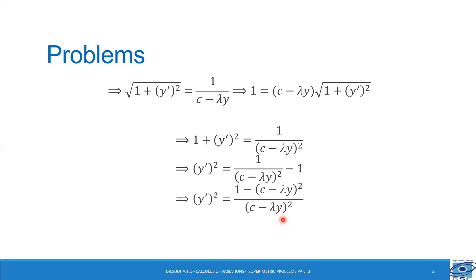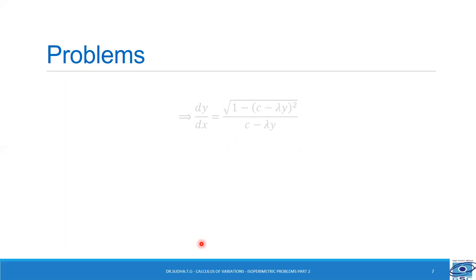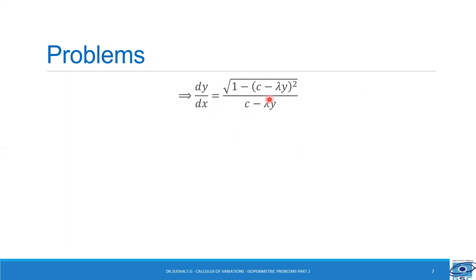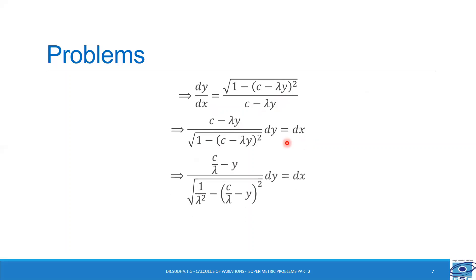Here we require y', so removing the root sign we get y' square equal to root of 1 minus (c minus lambda y) whole square divided by (c minus lambda y). Since y' equals dy/dx, we get dy/dx equal to root of 1 minus (c minus lambda y) whole square divided by (c minus lambda y). Separating the variables: (c minus lambda y) divided by root of 1 minus (c minus lambda y) whole square into dy equals dx. Removing lambda as a common factor in numerator and denominator gives c/lambda minus y divided by root of 1/lambda square minus (c/lambda minus y) whole square into dy equals dx.